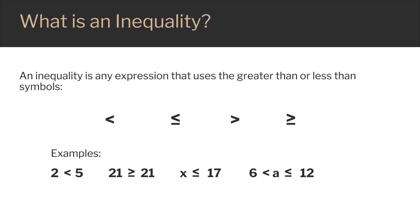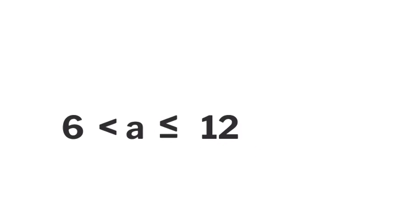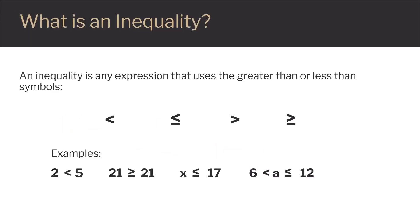This works because the line on the bottom tells us that the number might also be equal. The second two examples are of interest to us here because they have variables in them. The third example says: x is less than or equal to 17. Since x is a variable, we don't know what number it represents, but the inequality tells us that whatever number it is, it takes on a value less than or equal to 17. The last example is what is known as a compound inequality because it has two sides. Our variable a is in the middle, and the inequality says that a is greater than 6 but less than or equal to 12.